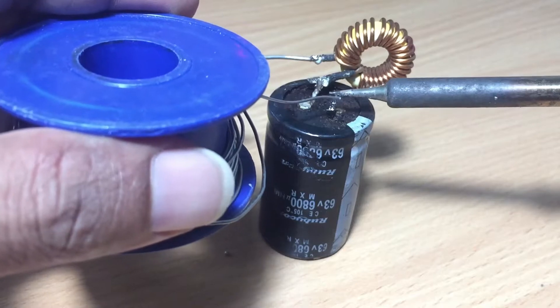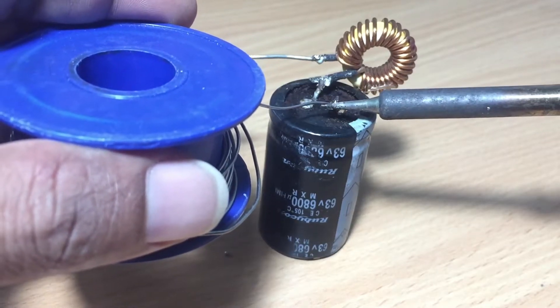Take the other diode and connect the anode of the diode to the negative pin of the capacitor.